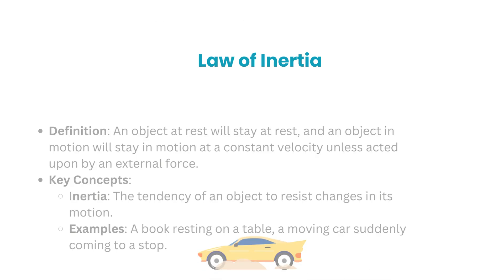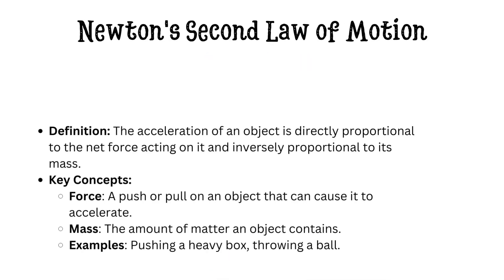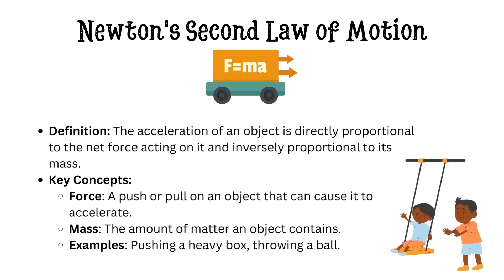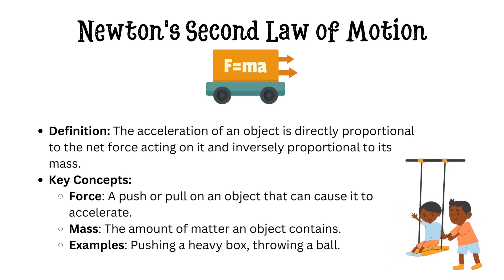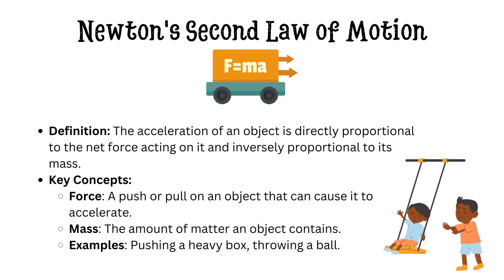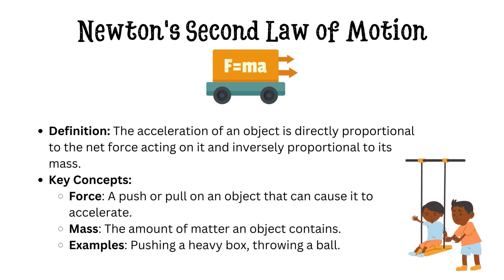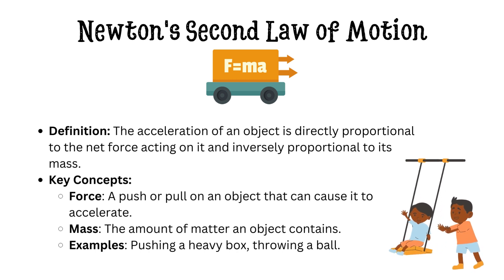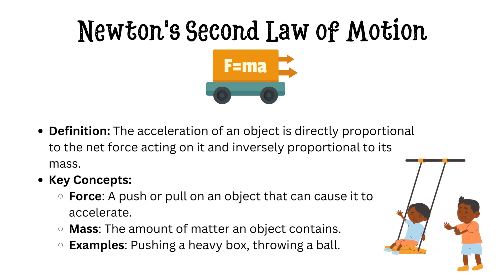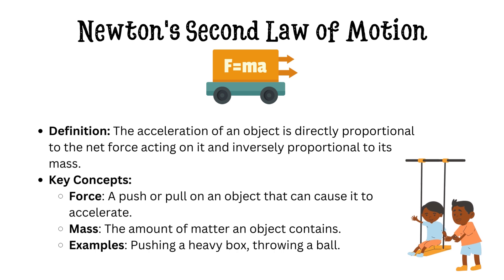Moving on, let's explore Newton's second law of motion, which is expressed mathematically as F equals MA. This law reveals the relationship between force, mass, and acceleration. According to this law, the acceleration of an object is directly proportional to the net force acting on it and inversely proportional to its mass. In simpler terms, the more force applied to an object, the greater its acceleration, provided the mass remains constant.